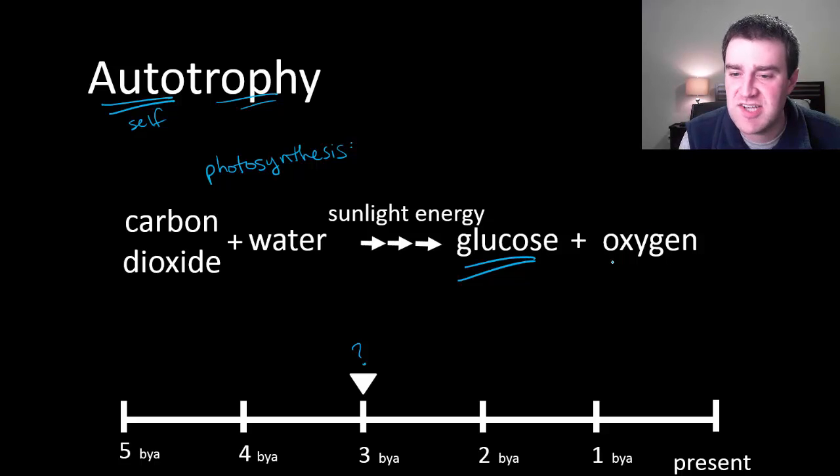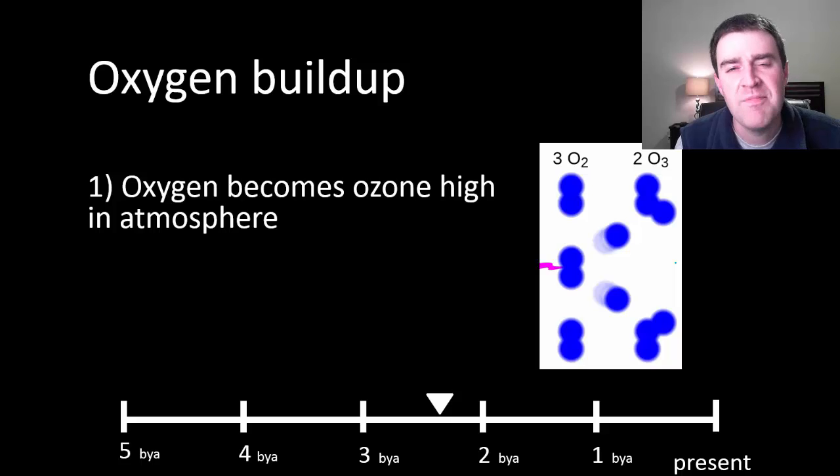But I also really want to emphasize this oxygen byproduct that they just kind of release. That's not the goal of photosynthesis, and yet oxygen was really important in the history of life as well, because maybe hundreds of billions of years of oxygen building up in the atmosphere eventually led to the ozone layer.